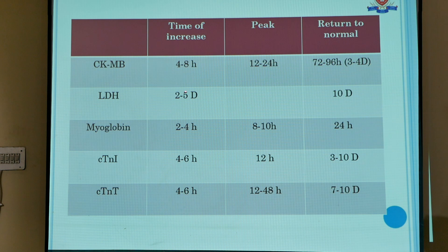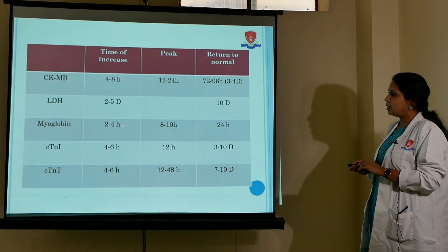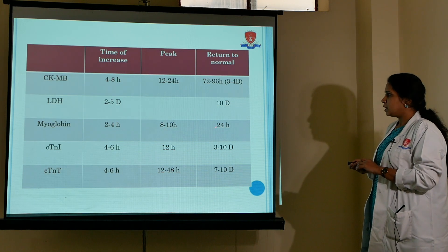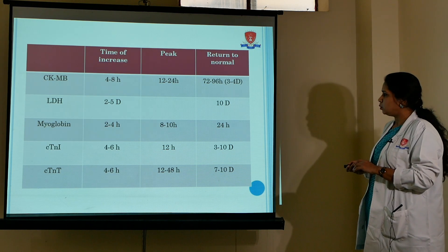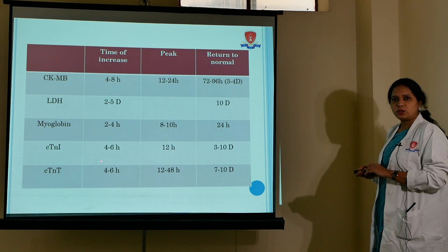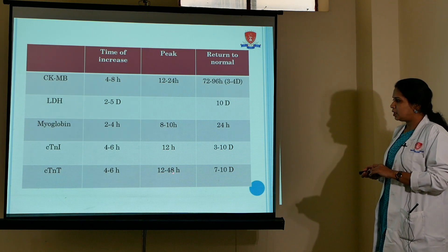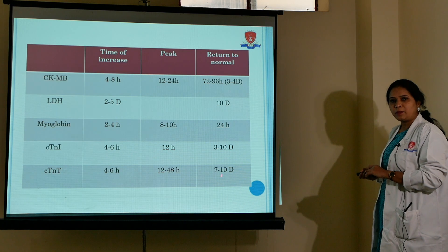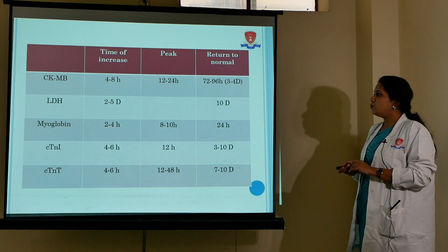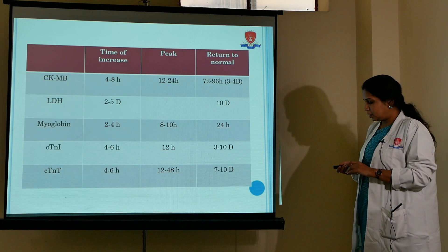Myoglobin starts rising immediately after cardiac muscle damage, remains elevated for 8 to 10 hours, and falls back to normal within the first 24 hours. Troponin I and troponin T start rising at 4 to 6 hours, reach peak in 12 to 48 hours, and return to normal only after around 10 days. The specificity and diagnostic requirement varies from one marker to another.